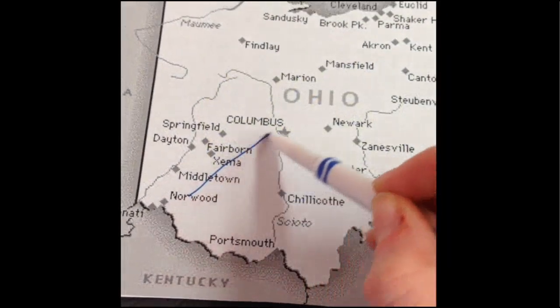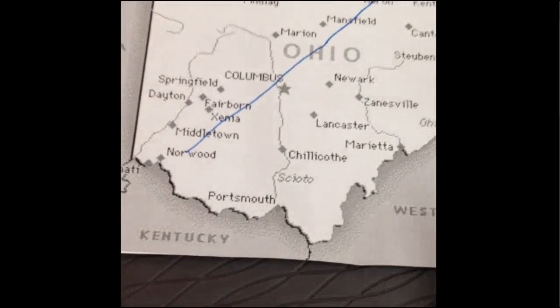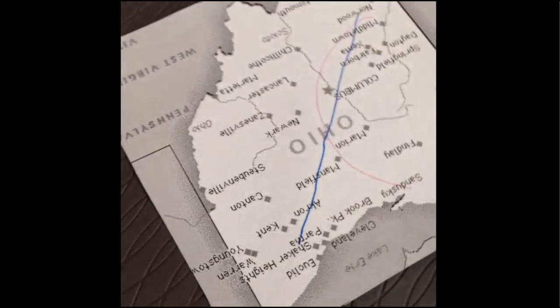If we were going to do a pencil and paper demo it would look something like this. Here's the straight line without the spinning. If we start spinning it and try again with a pink marker, you'll see that we are unable to draw a straight line.